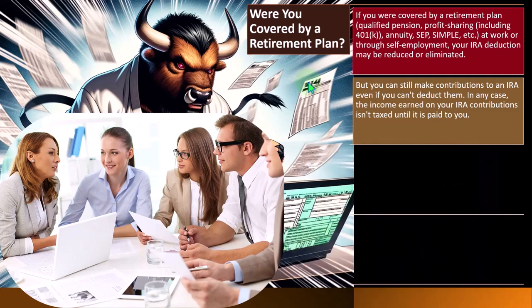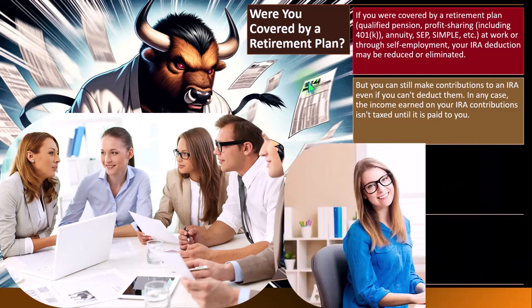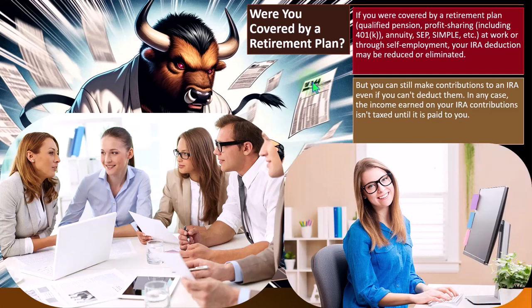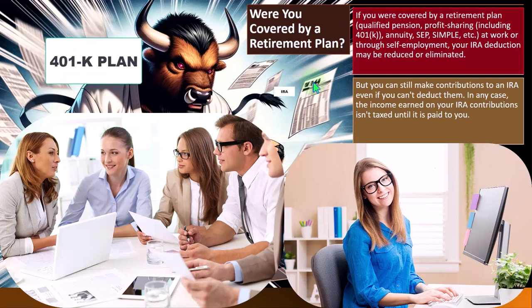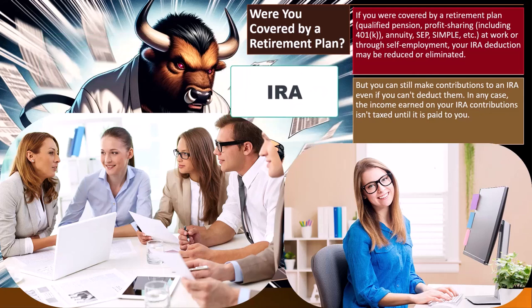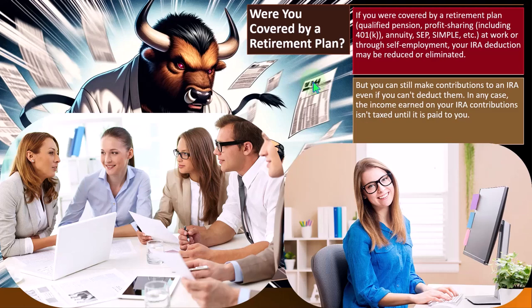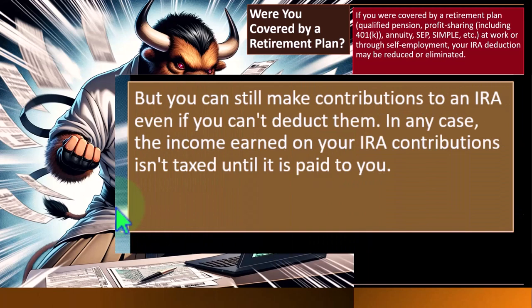These days people change jobs frequently, have self-employment income, and so on — so an IRA makes sense when you don't have access to a 401k. But it would be excessive if you could max out both the 401k and the IRA, giving people with a lot of cash flow a double benefit.